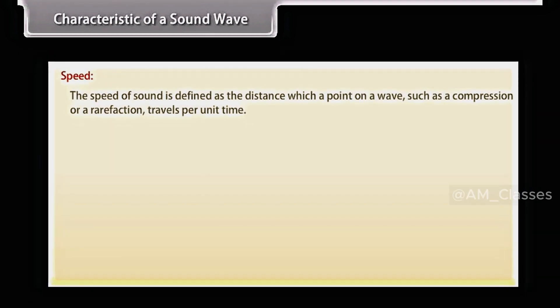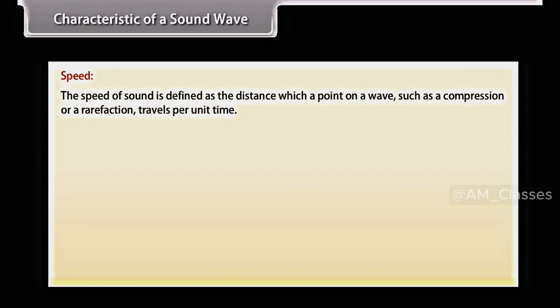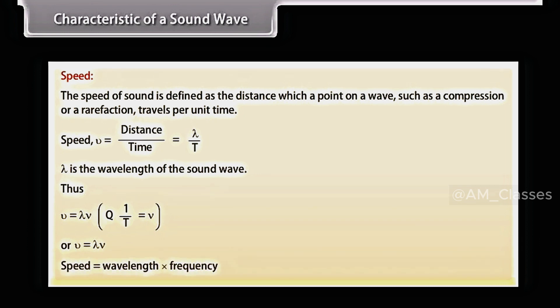Speed. The speed of sound is defined as the distance with which a point on a wave, such as a compression or a rarefaction, travels per unit time. We know that speed, v, is equal to distance upon time, which is equal to lambda upon T. Here, lambda is the wavelength of the sound wave. It is the distance travelled by the sound wave in one time period of the wave. Thus, v is equal to lambda into nu. That is, speed is equal to wavelength into frequency.